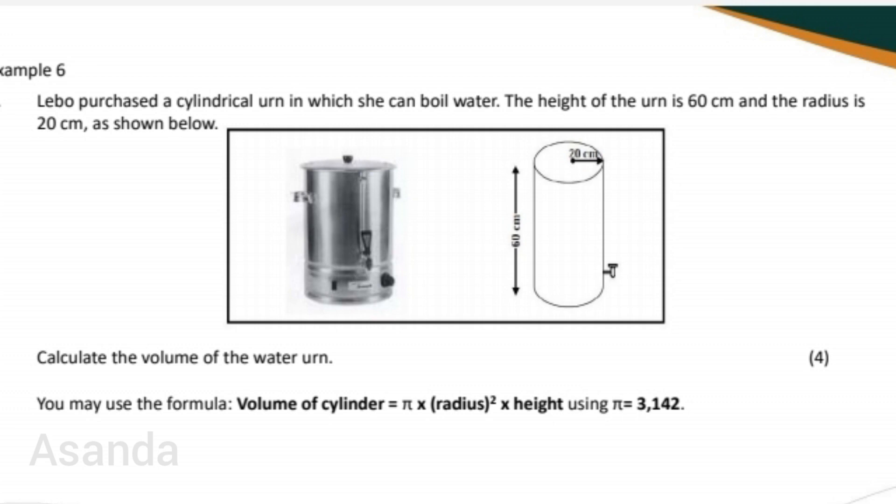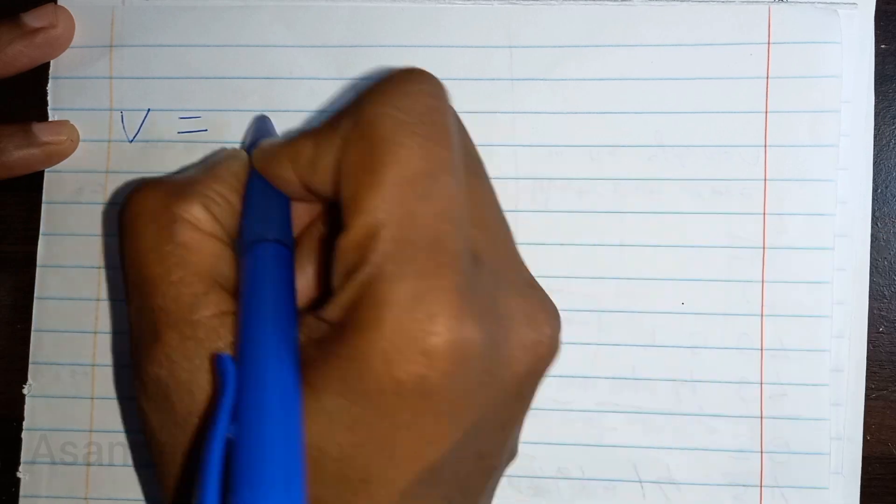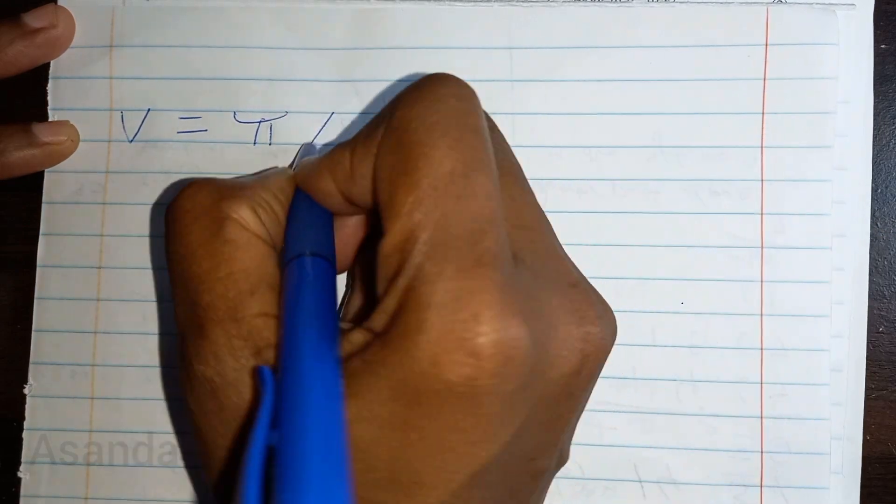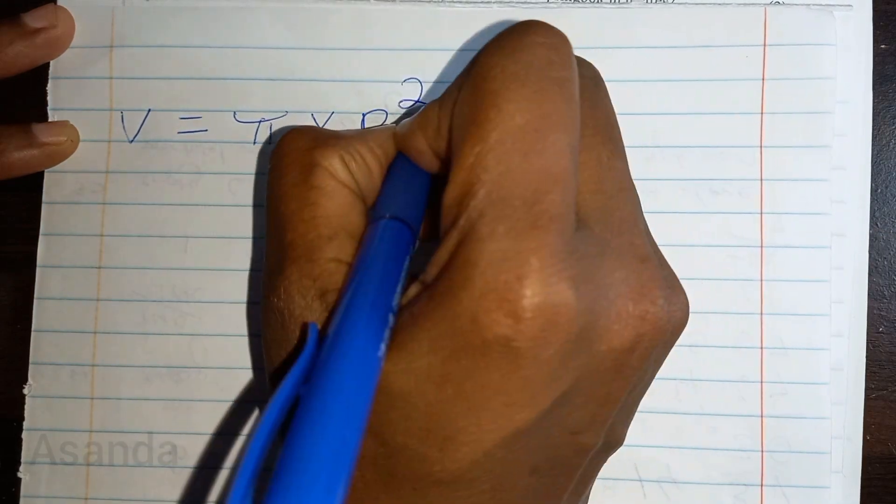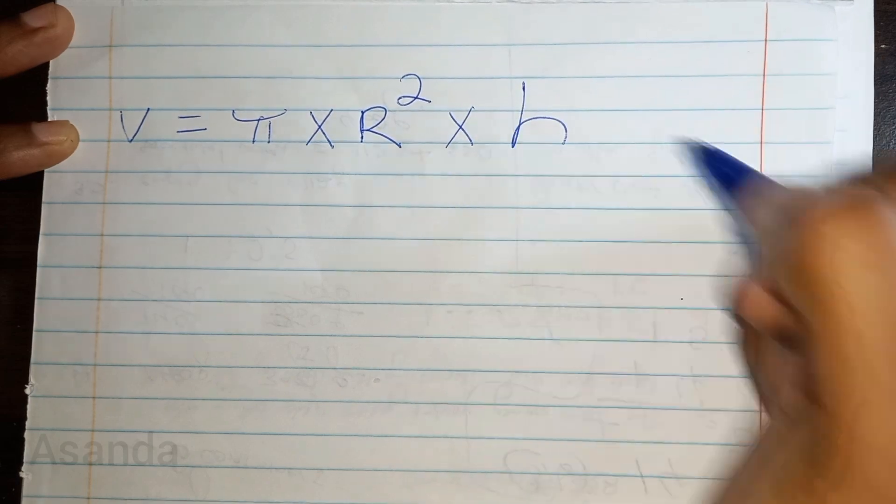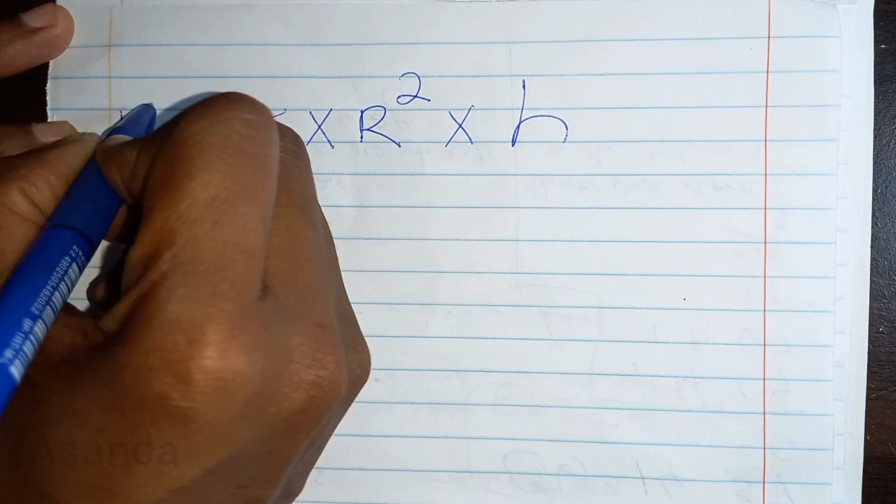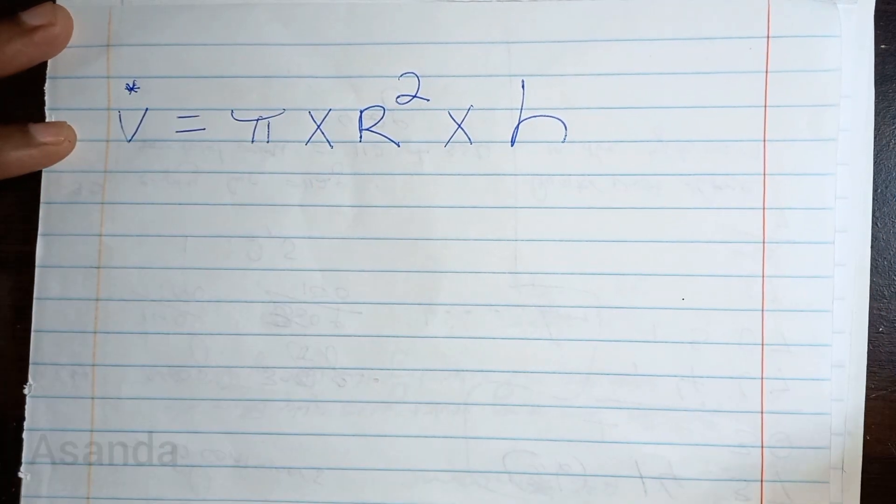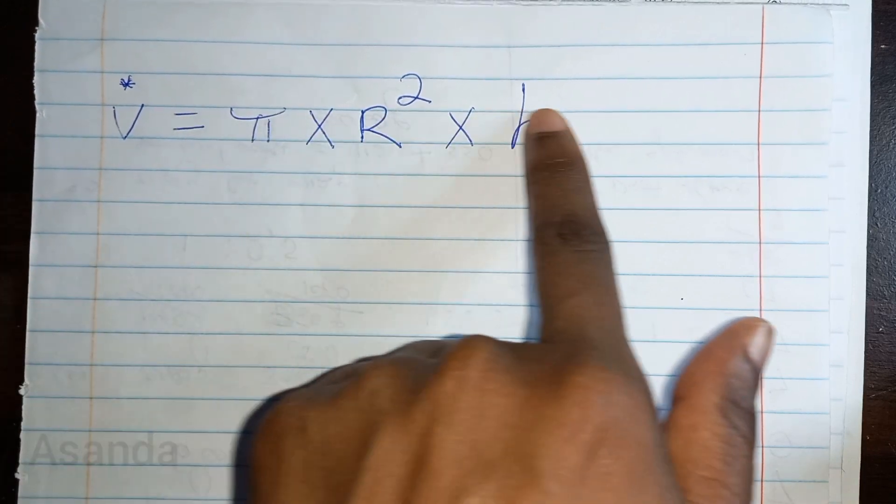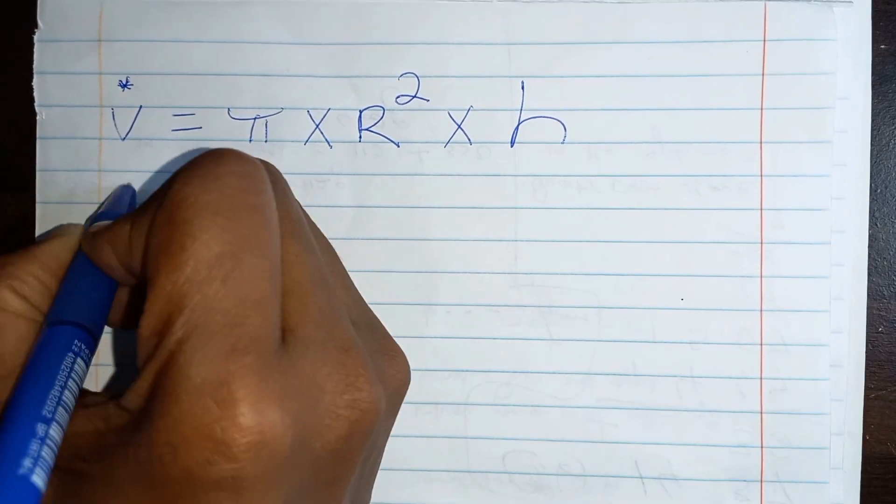What I'm going to do first is copy the formula: volume of a cylinder equals π times radius squared times height. I'm going to say volume here is my unknown, and identifying the unknown means I have to substitute everywhere else.